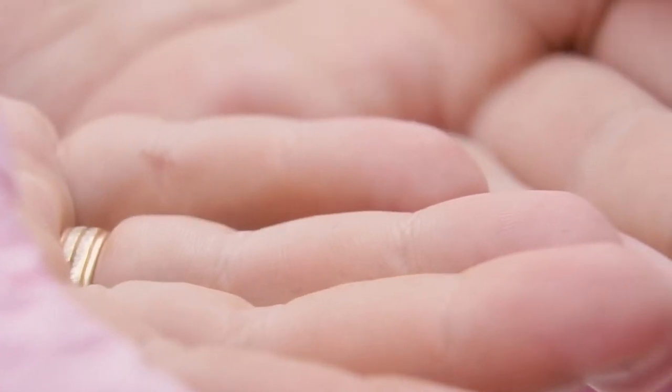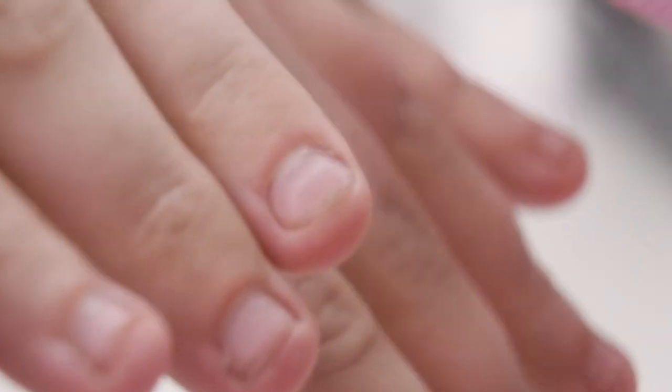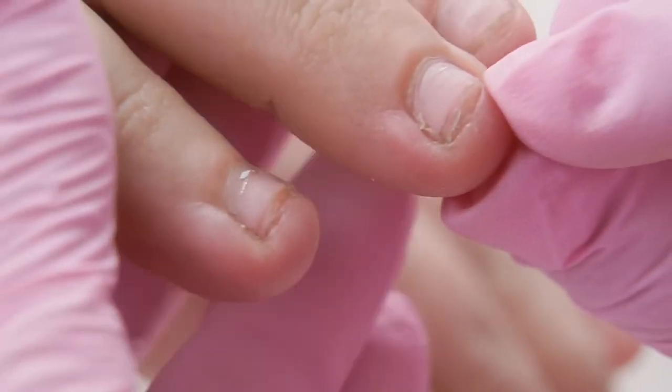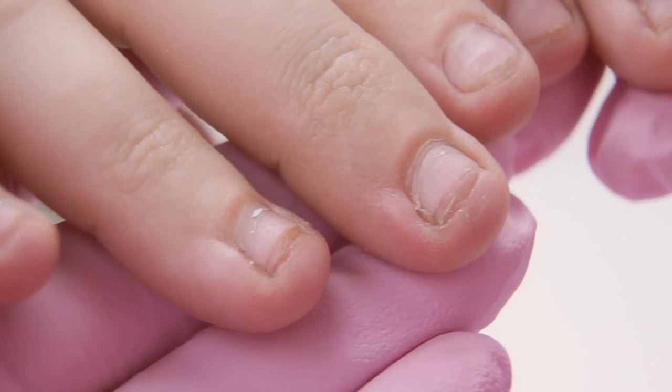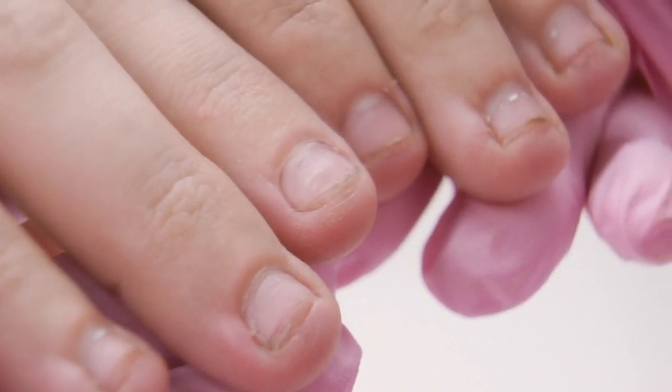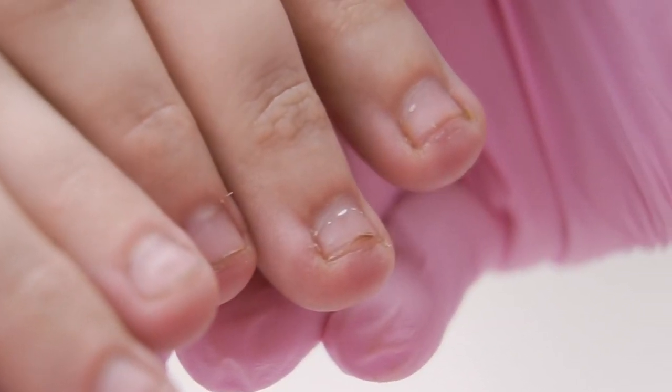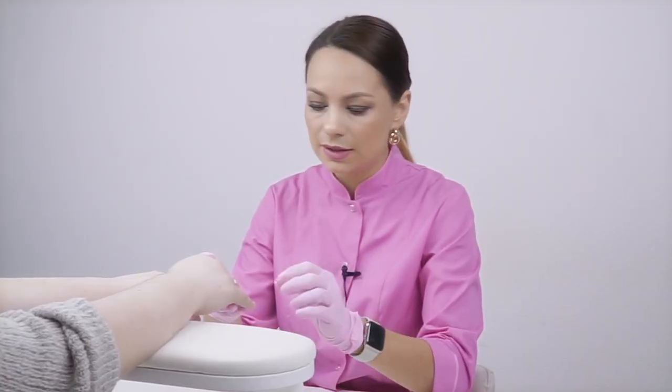These are the nails I have for today's transformation. Very short, bitten, wet palms, wet nails. The model complains that nothing holds on her nails, neither gel nor Acrygel. The only thing that she wore once was the acrylic system. Today we will try a slightly different method. I will show you all the nuances of how to work with such a nail plate correctly. What we can do to make it last longer? It's going to be really exciting! Watch the video till the end!